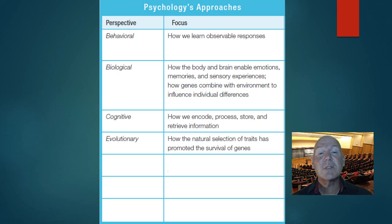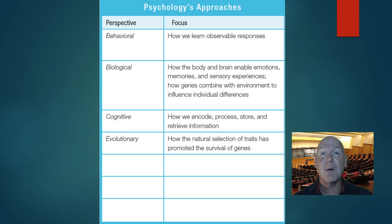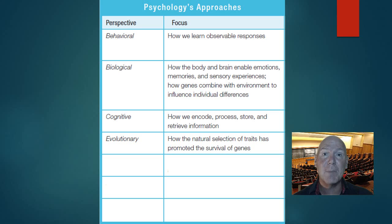An evolutionary approach looks at how the natural selection of traits has promoted the survival of our genes. For example, anxiety is a good thing to have when something is going to hurt us — it's really good that we want to avoid it. However, people with anxiety disorders may beg to differ, because their anxiety levels are beyond the normal and can create problems.